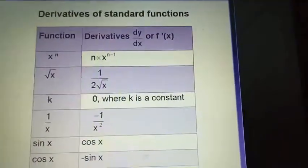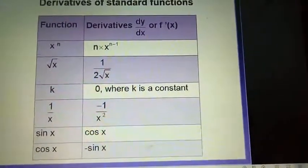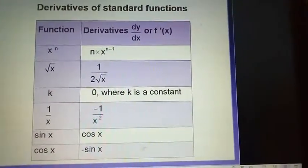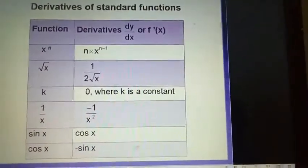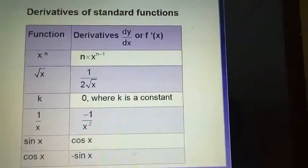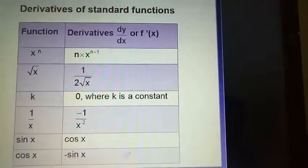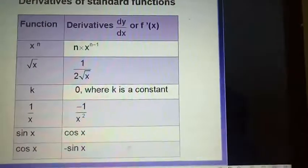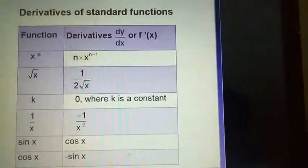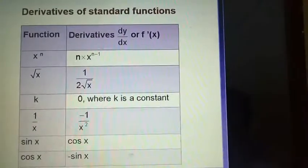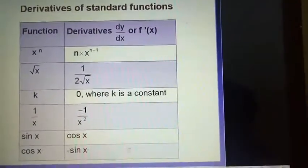Using this definition, we can obtain derivatives of standard functions. If the function is x raised to n, its derivative is nx raised to n minus 1. Remember, the base is a variable and the index is a constant. To remember this: it is index into x raised to index minus 1. The function root x is of this type only. The derivative of root x is 1 upon 2 root x. Since root x is x raised to half, its derivative is half into x raised to half minus 1, that is half into x raised to minus half, which is 1 upon 2 root x.